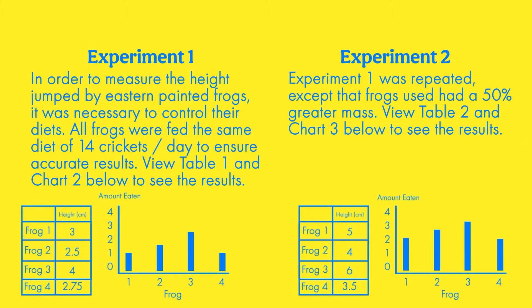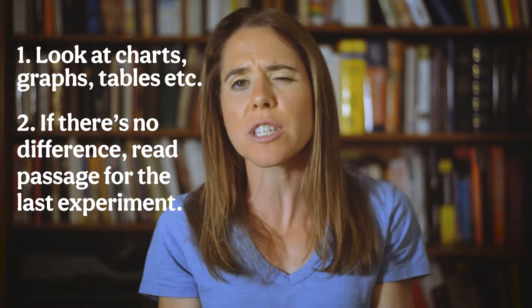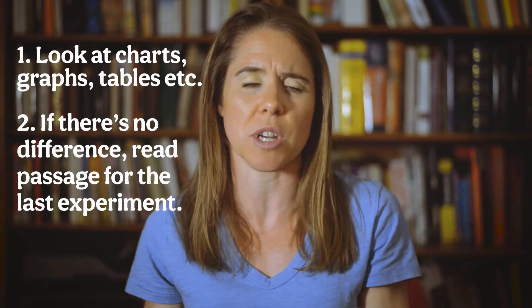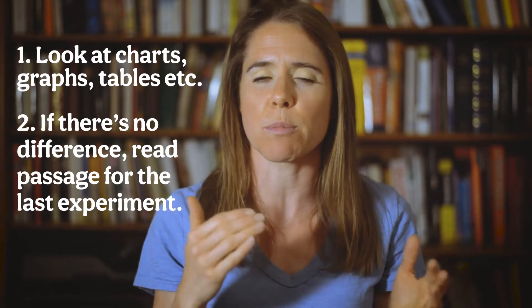In this frog example, let's say the second experiment's paragraph said everything was the same except the mass of the frogs was increased by 50%. Boom — we know exactly what happened, and it also explains why those frogs jumped higher and ate more because their mass was higher. So when doing a comparison question, first look at charts, graphs, and tables. If there's no apparent difference, read the paragraph of the later experiment — that will tell you what's different.